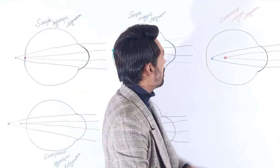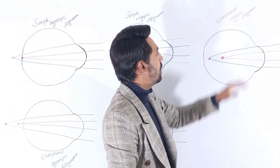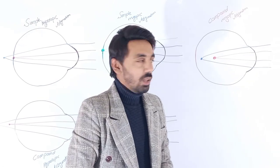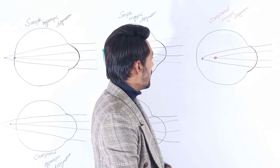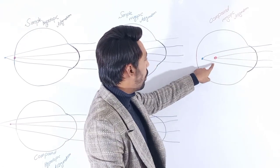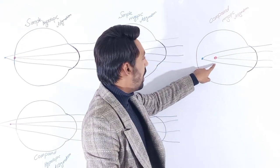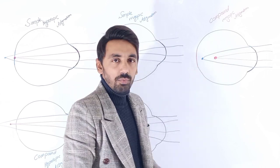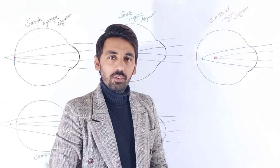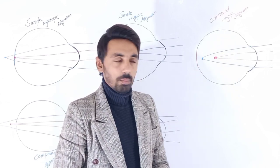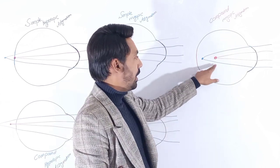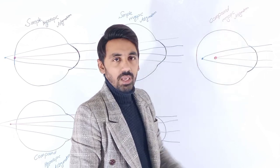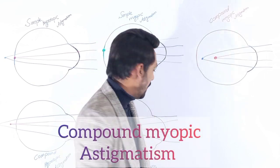Now we will discuss about compound myopic astigmatism. As you can see, both of the focal points are focused in front of the retina but at different positions. So this is called compound myopic astigmatism.